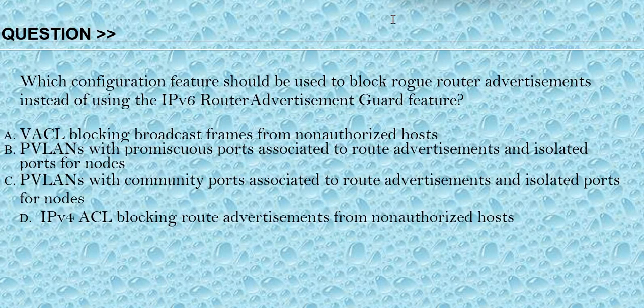Our question is: which configuration feature should be used to block router advertisement instead of using the IPv6 Router Advertisement Guard feature? Option A: VLAN blocking broadcast frames from unauthorized hosts. Option B: PVLANs with promiscuous ports associated to route advertisements and isolated ports for nodes. Option C: PVLANs with community ports associated to route advertisements and isolated ports for nodes. Option D: IPv4 ACL blocking route advertisements from unauthorized hosts. The correct answer is option B.